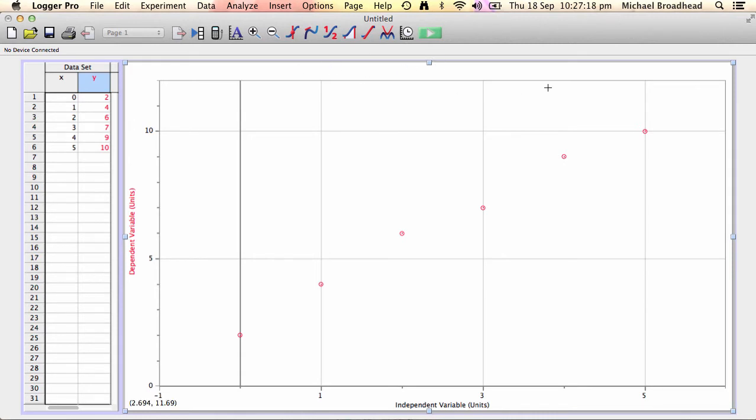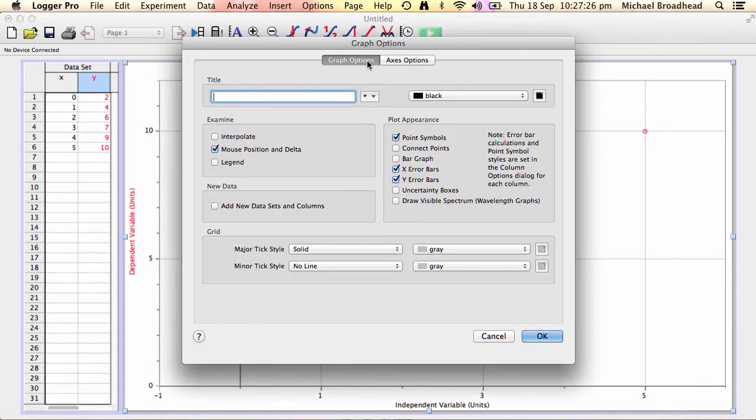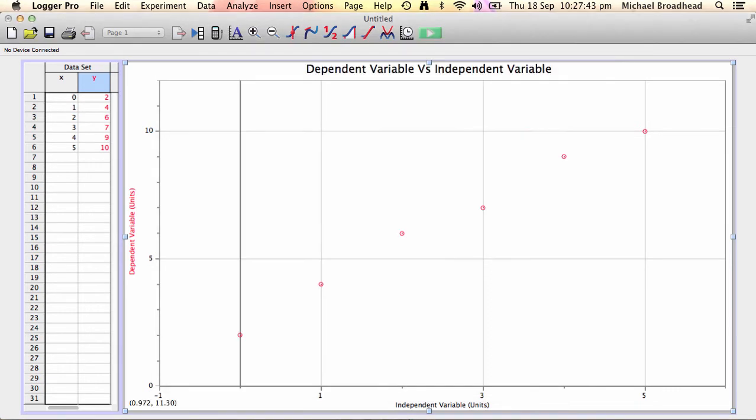Now looking at the title, we need a title. So again, just positioning your cursor and double-clicking, what we'll do is we'll click graph options. Now a title, you can come up with a descriptive title, and one way to do that is saying like your dependent variable versus your independent variable, but something that when someone reads it they can tell what the graph is about.